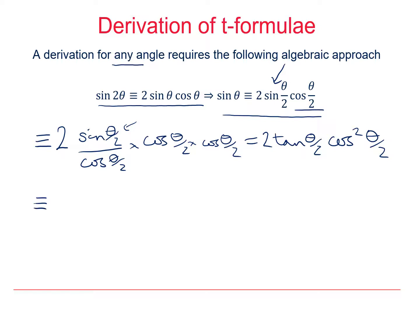So I can keep my 2 tan(θ/2), but cos²(θ/2) I can write as 1 over sec²(θ/2) using reciprocal trig functions. So I can rewrite that as 2 tan(θ/2) over sec²(θ/2).